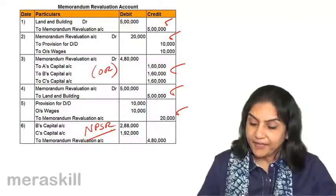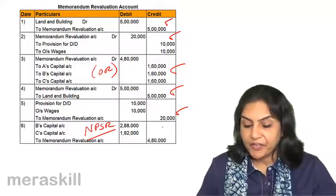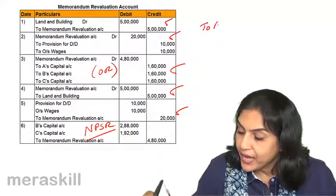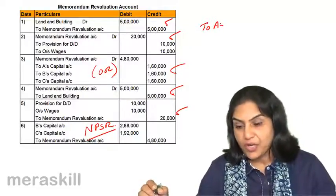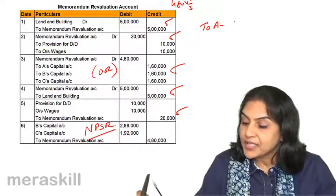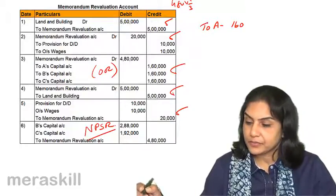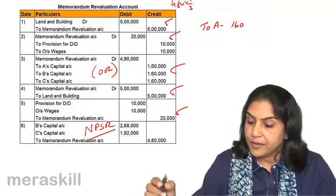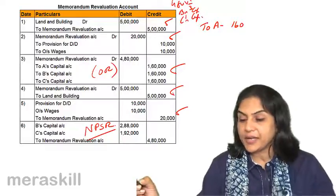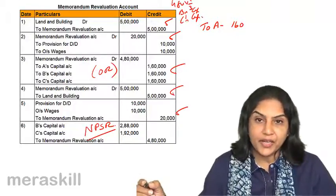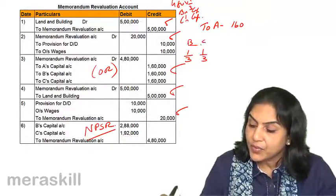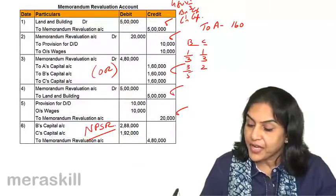The net effect of these entries is that A is retiring, so A's capital is credited with A's share of the profit: 4,80,000 into A's share of one-third = 1,60,000. What is debited? B's capital and C's capital account are debited — in the gaining ratio. B and C's old shares were one-third and one-third; they have become three-fifths and two-fifths respectively.